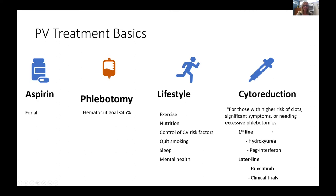Same lifestyle modifications apply for patients with PV as compared to ET. Cytoreduction options are also very similar. Indications for cytoreduction medications in PV include those with higher risk of blood clots — in PV, that's really anybody over age 60 or anybody who's had a prior blood clot. Another indication is significant symptoms requiring intervention, or needing excessive phlebotomies — if we're needing phlebotomies every week or every other week to keep hematocrit below 45%. First-line options are hydroxyurea and PEG interferon; later-line options include the JAK inhibitor ruxolitinib and clinical trial options.